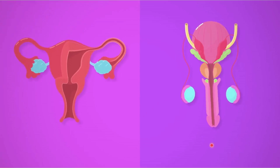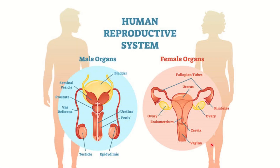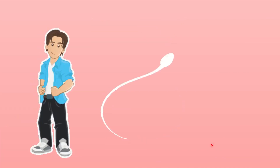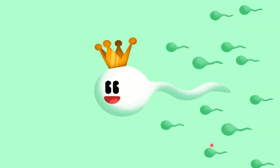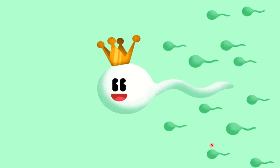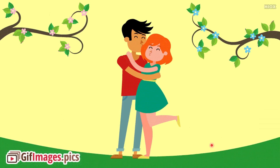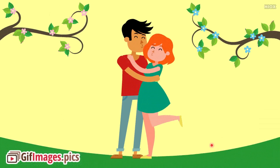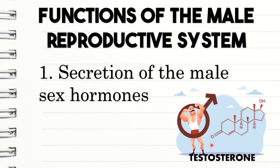Male and female reproductive systems share a number of similarities, but there is a striking difference between the male and female reproductive system. For example, male sperm production begins at puberty, while females are born with ova. Moreover, males produce millions of sperm while females release one ovum each month. But one thing is for sure: the reproductive system is important. Now, let us discuss first the male reproductive system.